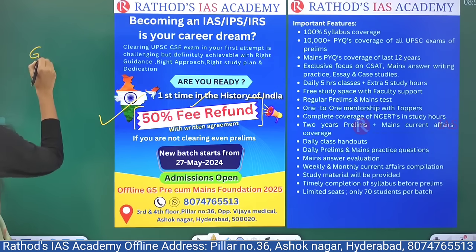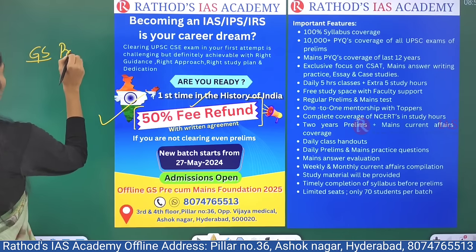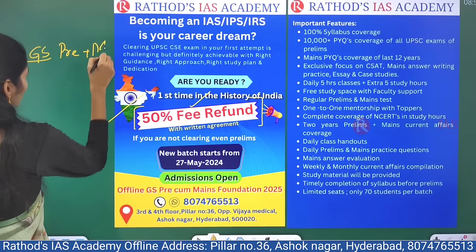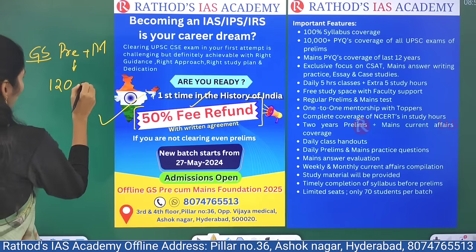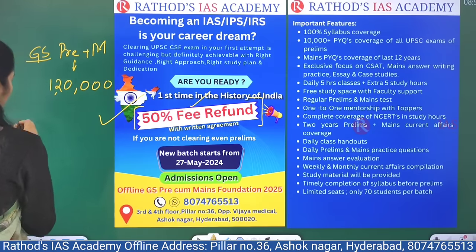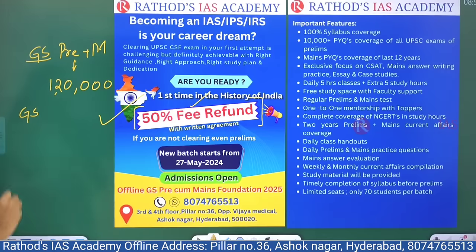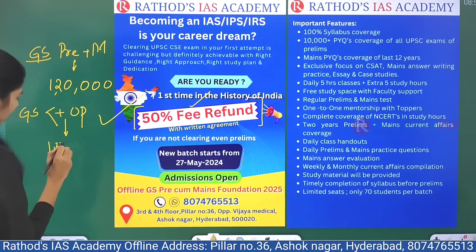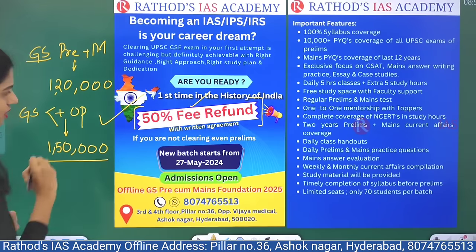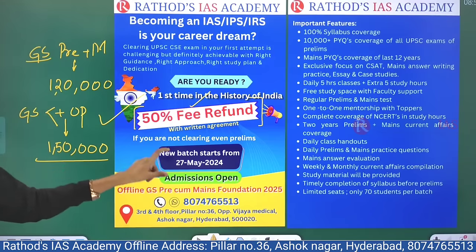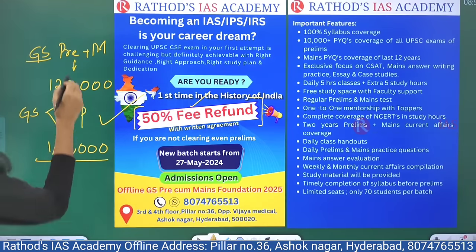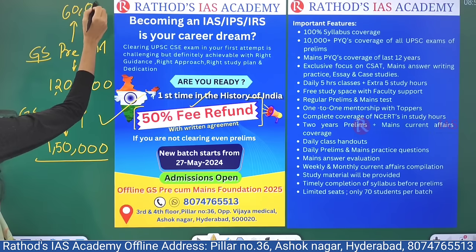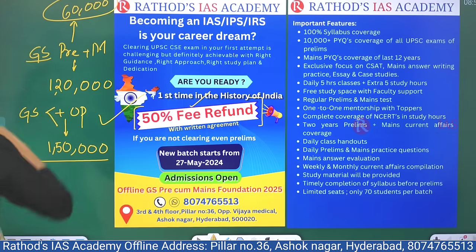For GS Prelims plus Mains Foundation, we are charging around 1,20,000 rupees. If you want GS Integrated — that means GS plus your optional, foundation course plus optional — we are charging around 1,50,000 rupees. If you are not clearing even Prelims after this coaching, we are going to refund 50%, that is around 60,000 rupees, paid back to you.